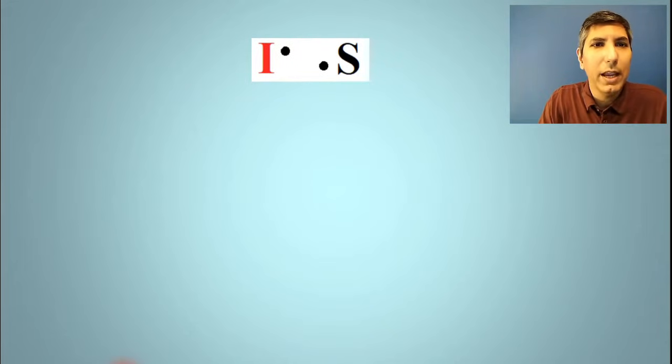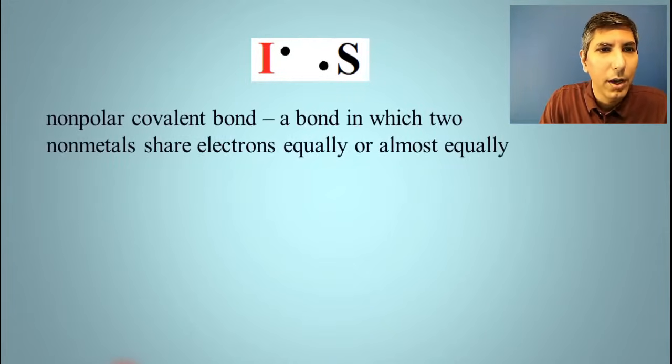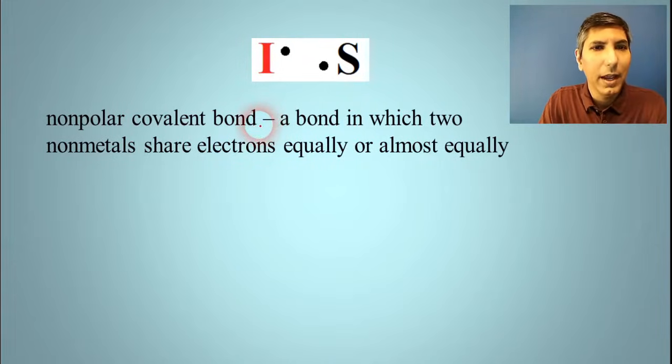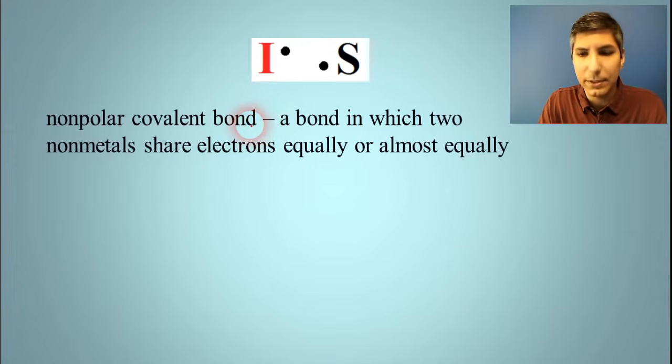So if we have a chemical bond like this, that's what we call a nonpolar covalent bond. When you have iodine and sulfur bonding, these two electrons, it's a bond where we have the two nonmetals and they're sharing electrons equally or almost equally. And we have a lot of chemical bonds that do that.